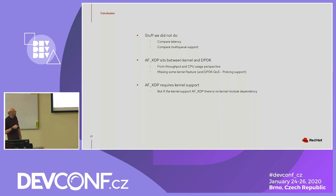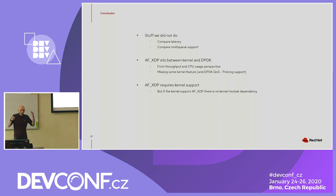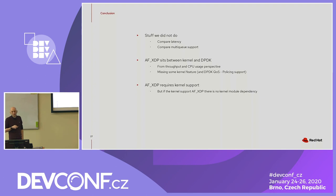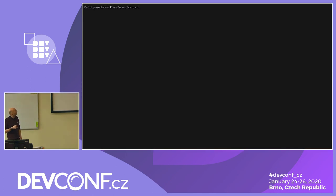In conclusion, we didn't compare latency and didn't do any multi-queue testing to see if that speeds things up further — those are still things that need to be done. AF-XDP sits somewhere in the middle — between the kernel and DPDK. It has the advantage of keeping the kernel driver, making it a bit easier to set up. But if you need the additional throughput, you might want to set up DPDK. Also, your kernel needs to support AF-XDP, and some distributions don't have it yet, in which case you might still want to use DPDK.